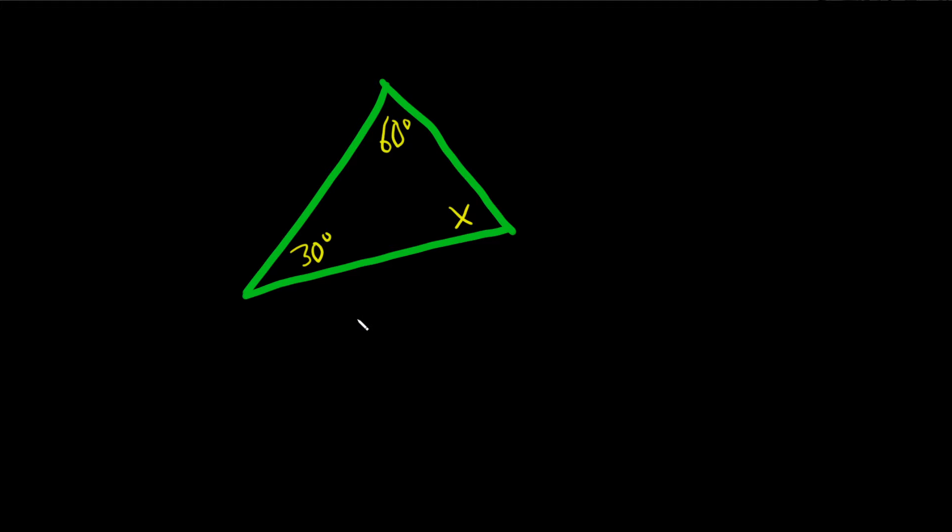In this problem, we're given a triangle with two measurements inside, and we have to find a third measurement. The thing with triangles is if you add up the measures of all the angles inside the triangle, you're always going to get 180 degrees.